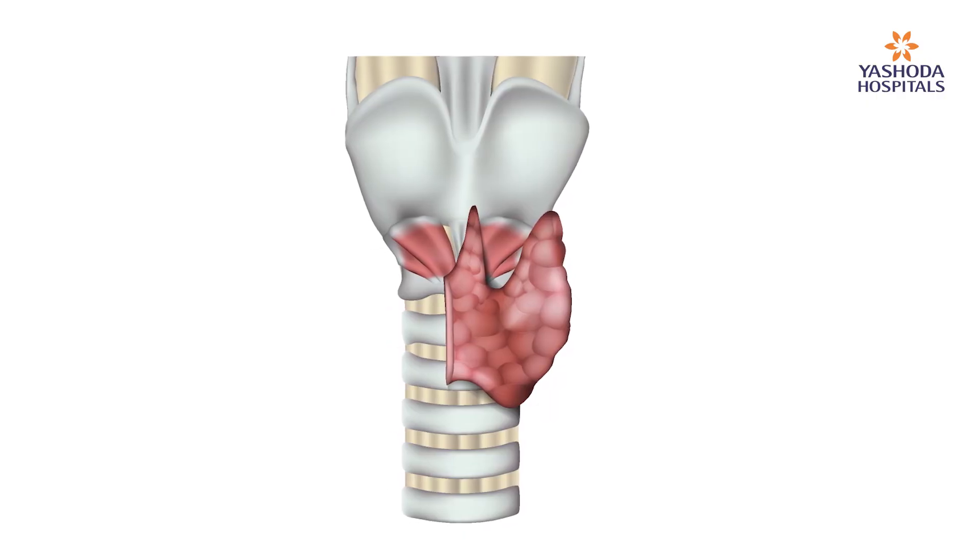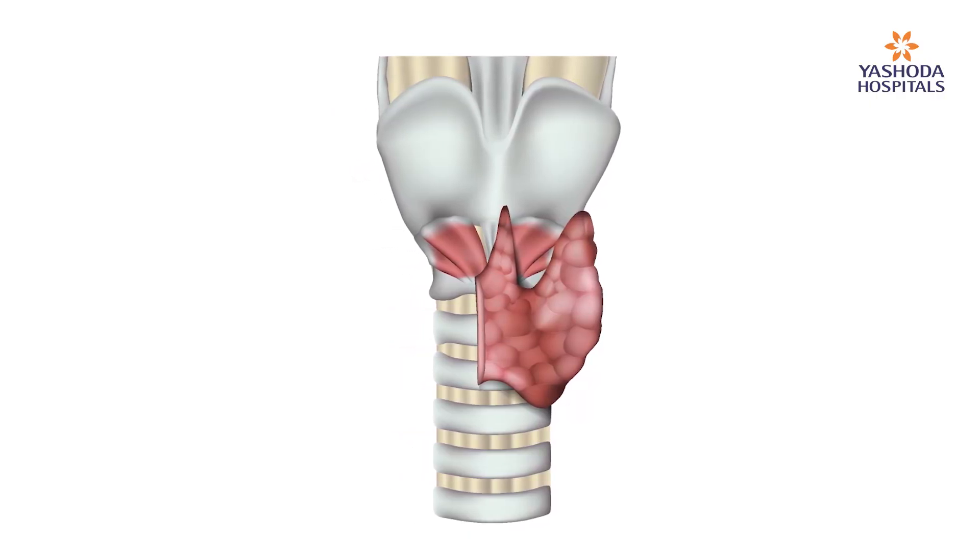Thyroid surgeries can be of two types: hemithyroidectomy or total thyroidectomy. Hemi means half of the thyroid will be removed, and total means complete removal. The thyroid has two lobes — right and left — and the part in between is called the isthmus. Removing one lobe with the isthmus is called hemithyroidectomy; removing both lobes and the isthmus is called total thyroidectomy.